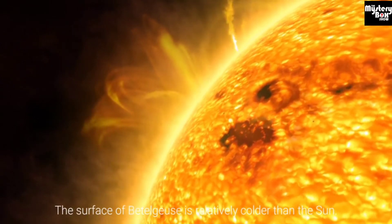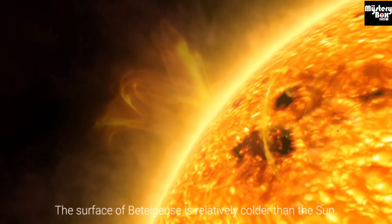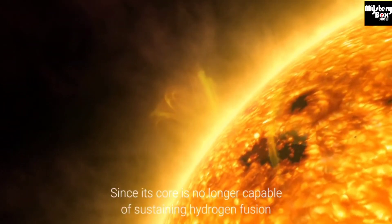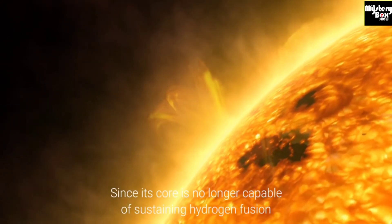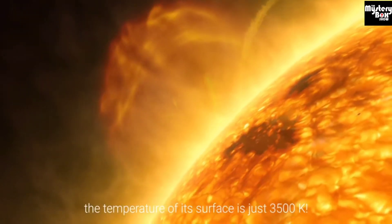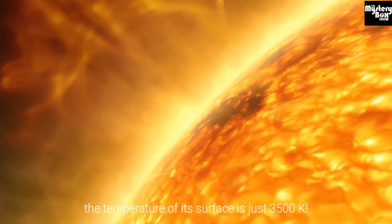The surface of Betelgeuse is relatively colder than the sun. Since its core is no longer capable of sustaining hydrogen fusion, the temperature of its surface is just 3500 Kelvin.